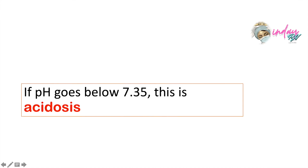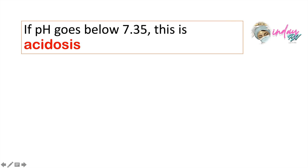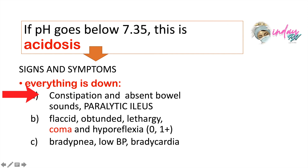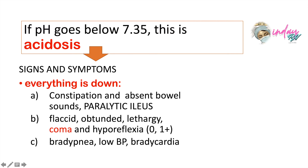Let's also discuss acidosis. If pH goes below 7.35, this is acidosis. The signs and symptoms could be constipation and absence of bowel sound. If the patient in alkalosis suffers from borborygmy, here in acidosis the patient will suffer from paralytic ileus — these are the GI signs and symptoms. The patient will also suffer flaccidity, obtundation, lethargy, and worse, coma. Note that the patient will suffer hyporeflexia, grade 0 to 1. Consider here in acidosis that their vital signs are all at a low level — bradypnea, low BP or hypotension, and bradycardia.